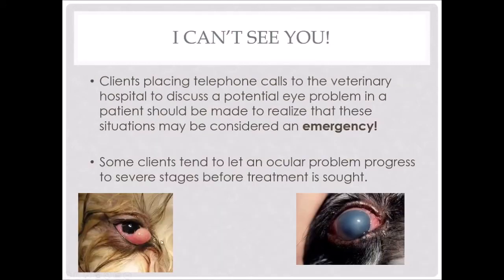Clients placing telephone calls to the veterinary hospital to discuss potential eye problems should be made to realize that these situations could be considered an emergency. If an animal has sudden blindness, red eyes, or cloudy eyes, that is an emergency — we need to see those patients to make sure they're not going to lose their vision permanently or lose their eye. Some clients tend to let ocular problems progress to severe stages before treatment is sought. For example, a dog with a prolapsed third eyelid gland can cause eye damage, and a cloudy eye showing edema between the layers of the cornea is usually indicative of a severely diseased and painful eye.